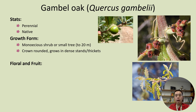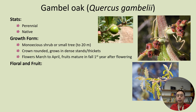The crown of Gambel oak trees is typically rounded and they usually grow in dense stands or thickets. It typically flowers from March to April — it's a cool season plant — and the fruits usually mature after the first fall of flowering.